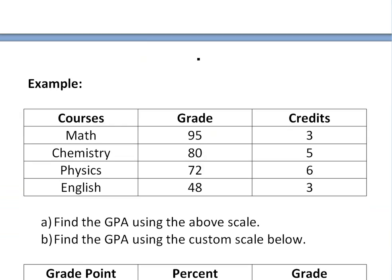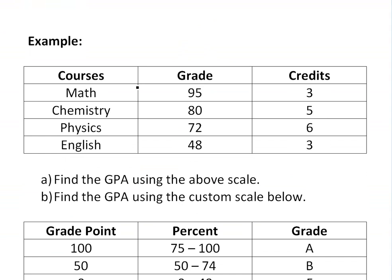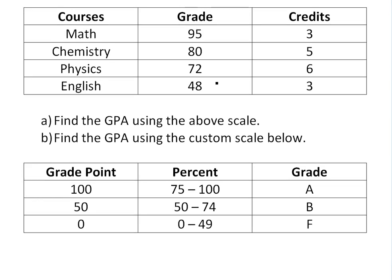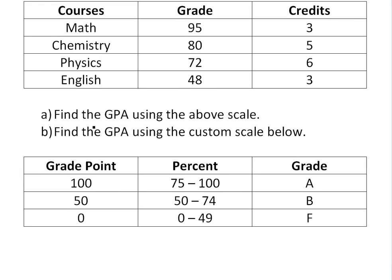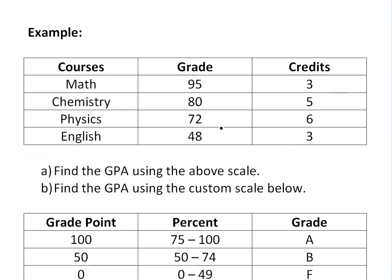The example I'm going to go over is this one. If you're given a report card that looks something like this — you had math, chemistry, physics, and English, and you got 95, 80, 72, and 48 in these courses respectively — and each course has credits of 3, 5, 6, and 3, meaning how much the course is worth overall. Physics is worth the most, chemistry second, and math and English are the same. Part A asks us to find the GPA using the above scale.